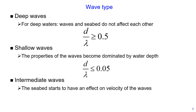And finally, intermediate waves. For this type of waves, the seabed starts to have an effect on the velocity of the waves. These waves are defined when the ratio of water depth divided by wavelength is greater than 0.05 but less than 0.5.